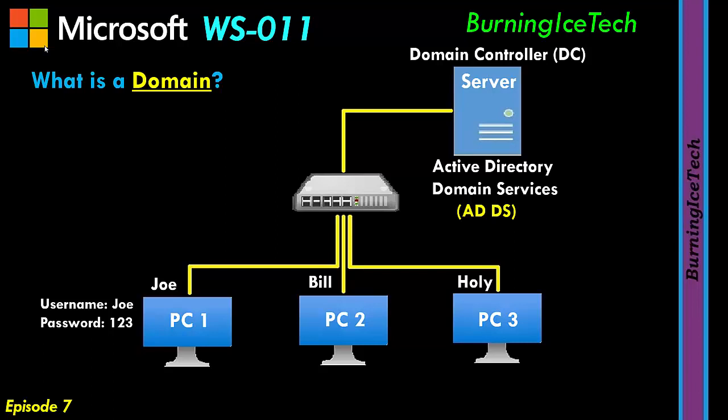Now, unlike earlier, it's not going to check locally on the SAM — the local little database — if that account actually exists and the password is correct. Instead, it's going to send that request all the way up to the domain controller, your Active Directory. That account does not reside in the SAM locally; it resides now in the Active Directory database on the server. So PC1 is sending a request to the server saying: I've got someone here who just typed in a username and a password — the username is Joe and the password is 123. Does this account exist, and does the password match the said account?